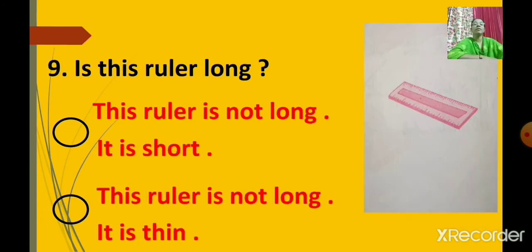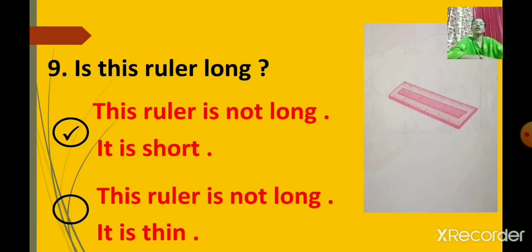Number nine. Is this ruler long? Option one: this ruler is not long, it is short. Option two: this ruler is not long, it is thin. Observe the picture. Does this ruler look long? Does it look short or thin? The correct answer is option one: this ruler is not long, it is short. Click on the first option.